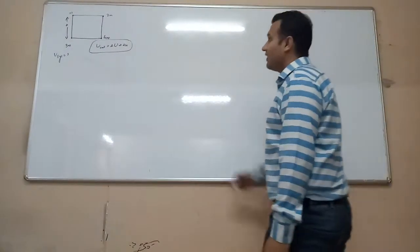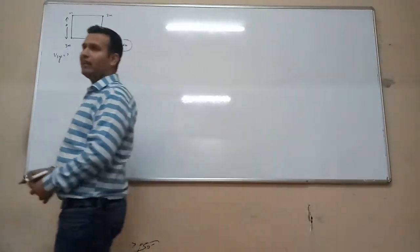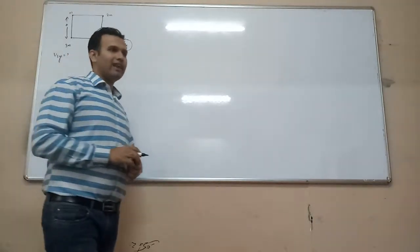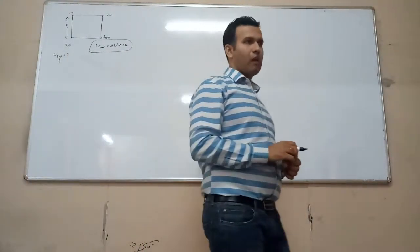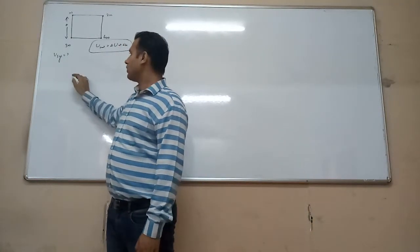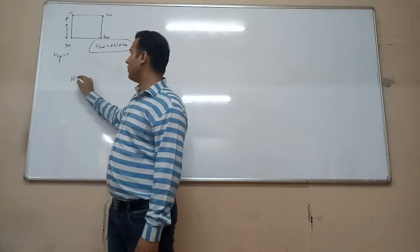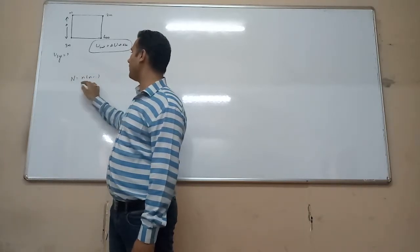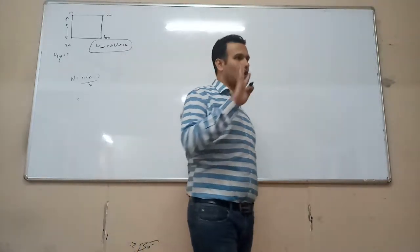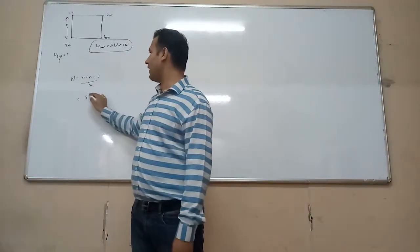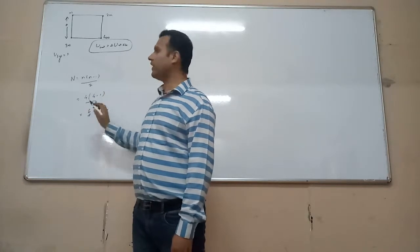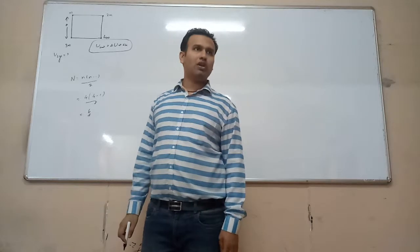There are 4 particles kept at the vertices of a square, and the side of the square is A. We need to find the potential energy of this system of particles. The number of pairs is n(n-1)/2, where n is the number of particles. With n = 4, this gives 4 × 3 / 2 = 6 pairs total.